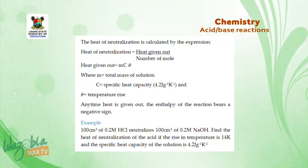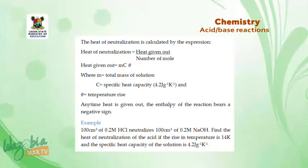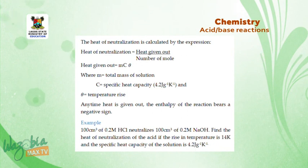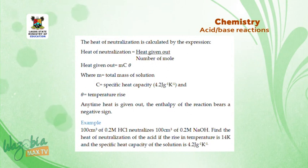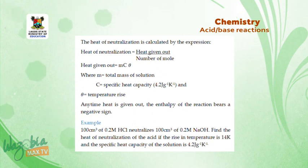Heat of neutralization is calculated using the expression: heat given out divided by number of moles. Heat given out equals mcθ, where m is the total mass of solution, c is the specific heat capacity (4.2 J g⁻¹ K⁻¹), and θ is the temperature rise. Anytime heat is given out, the enthalpy of the reaction bears a negative sign.